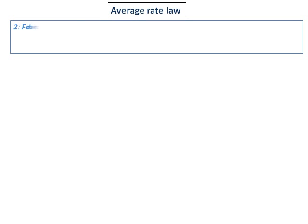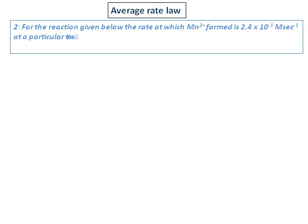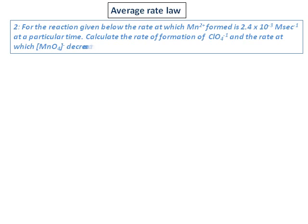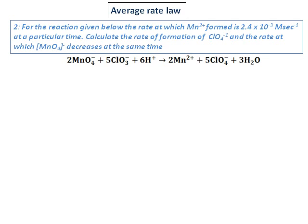Question number 2 is also somewhat similar to the previous one. For the reaction given below, the rate at which Mn²⁺ is formed is 2.4 times 10 to the power of negative 3 molar per second at a particular time. Calculate the rate of formation of ClO₄⁻ and the rate at which MnO₄⁻ decreases at the same time. Basically, the rate of formation of one product is given and they are asking for the rate of formation of another product and the rate of decrease of one of the reactants.